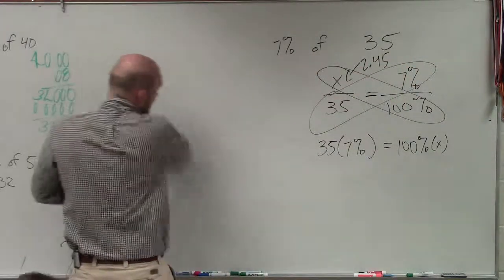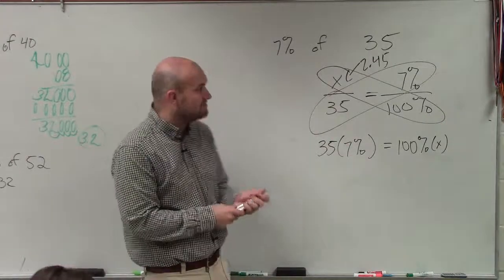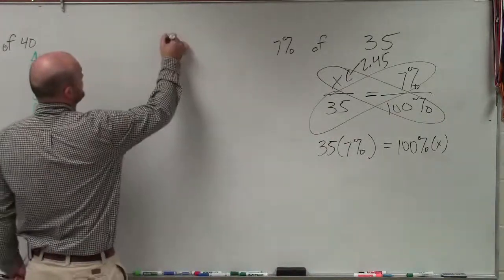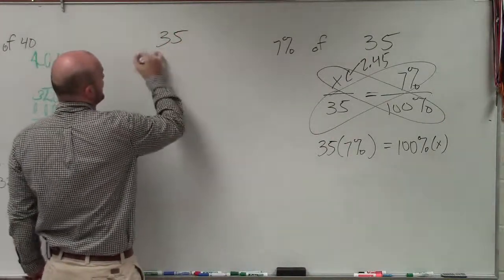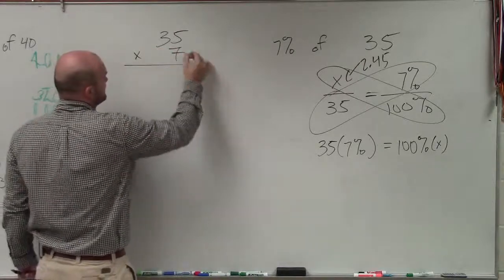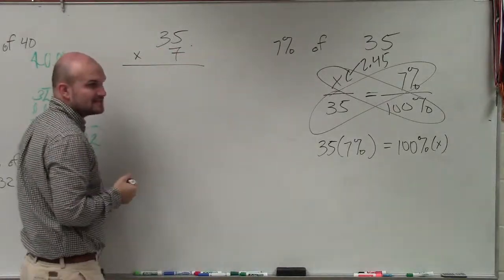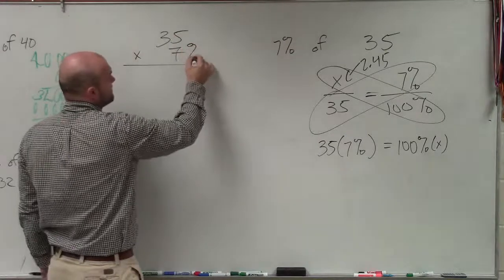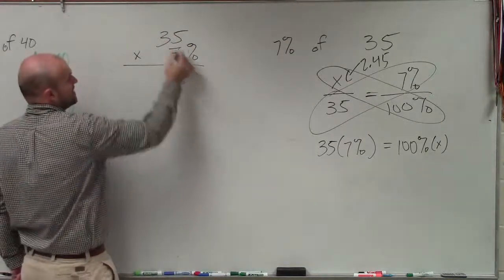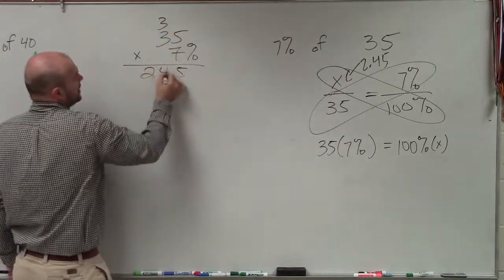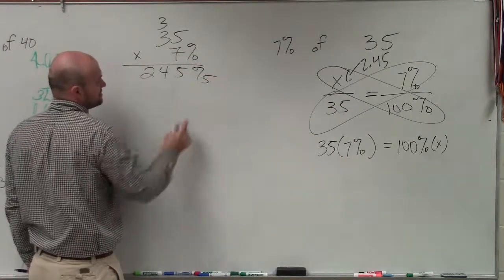If I do my cross product and multiply 35 times 7%, if I have 35 times 7%, what I'll have is going to be the exact same answer I had here. I'll have 245%. What the heck is that?